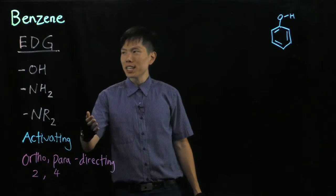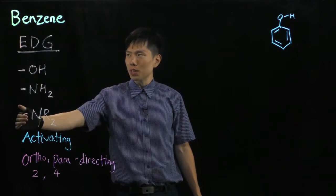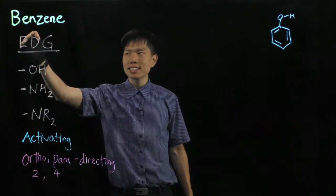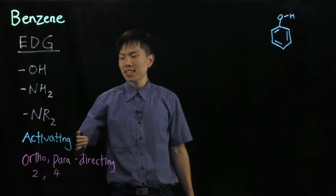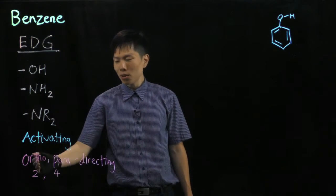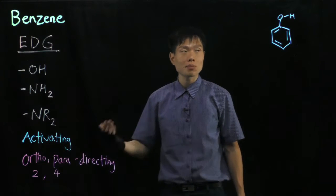In this part, you'll be learning why these groups, when they're placed next to the benzene ring, are considered electron donating, activating, and ortho-para directing for the next substituent.